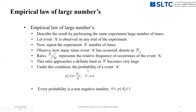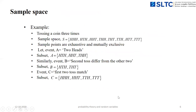Under such conditions, the probability of event A is the ratio Na/N when N tends to infinity. Every probability of occurrence of an event is a non-negative number — it varies from a minimum of zero to a maximum of one. In the next video, we will discuss the sample space and its different properties. Thank you.